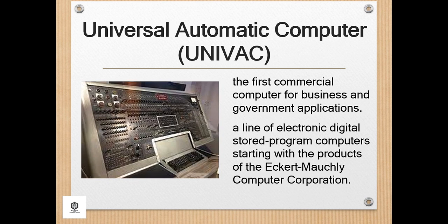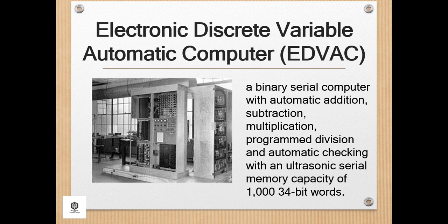Mauchly and Eckert left the University of Pennsylvania during 1946 and received funding from the Census Bureau to build the UNIVAC, the first commercial computer for business and government applications. UNIVAC, or Universal Automatic Computer, is a line of electronic digital stored-program computers starting with the products of the Eckert-Mauchly Computer Corporation. Later, the name was applied to a division of the Remington Rand Company and successor organizations.